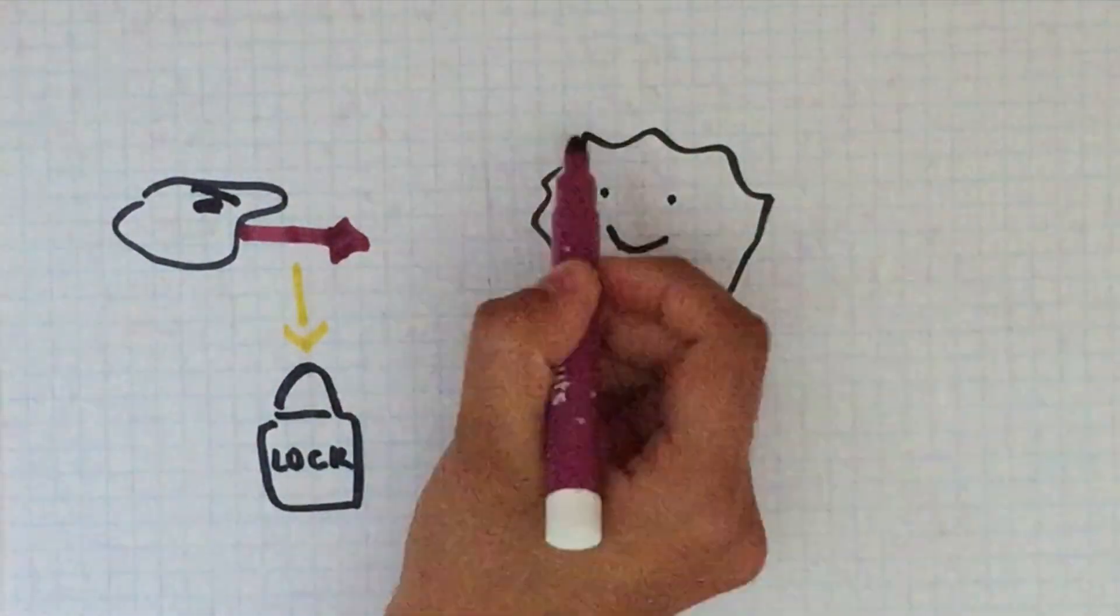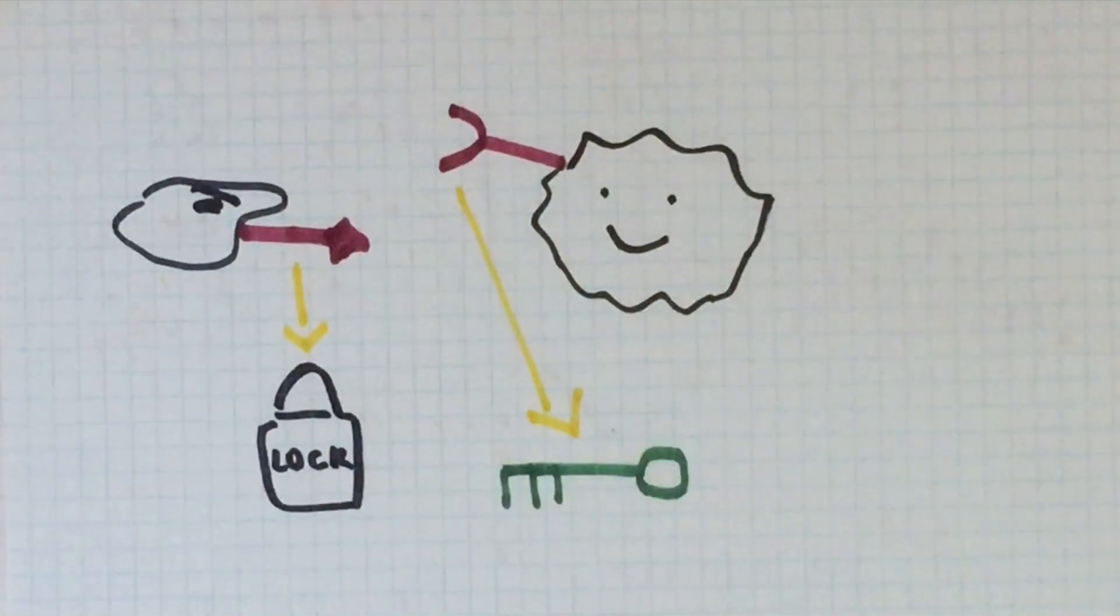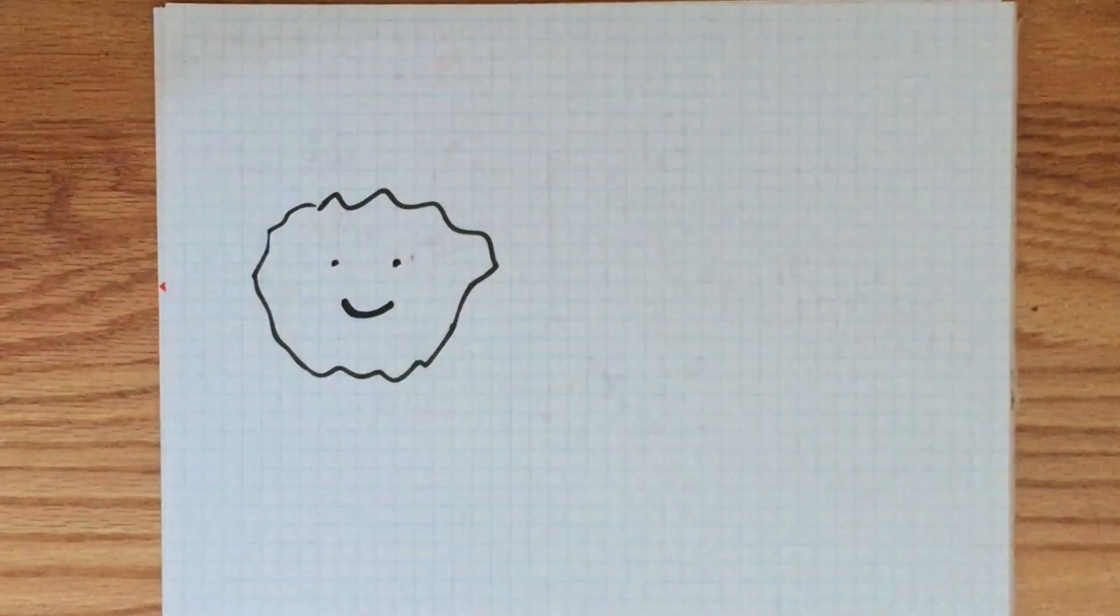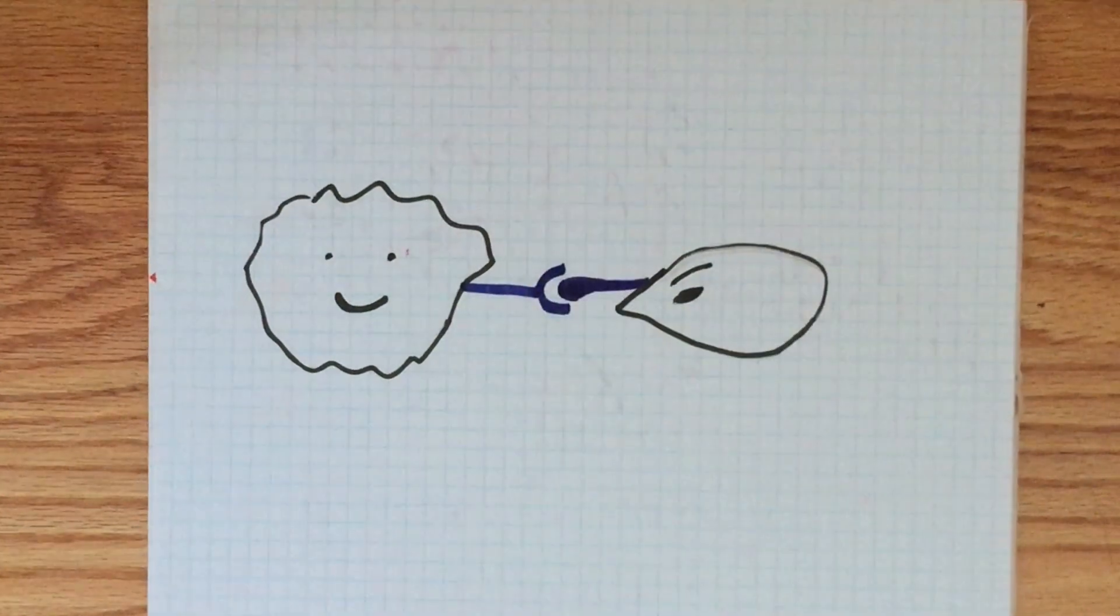When a T-cell with a complementary receptor to the foreign antigen bonds, it releases certain toxins that kill the cell. This is the same process that occurs with a cancerous cell.